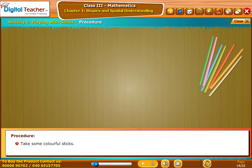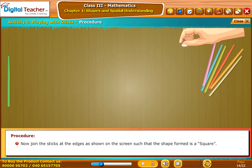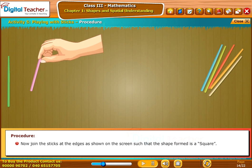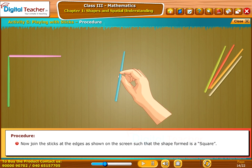Take some colorful sticks. Select four sticks from them. Now join the sticks at the edges as shown on the screen such that the shape formed is a square.